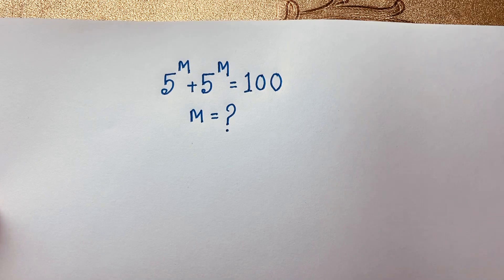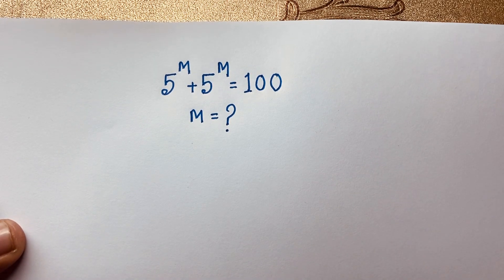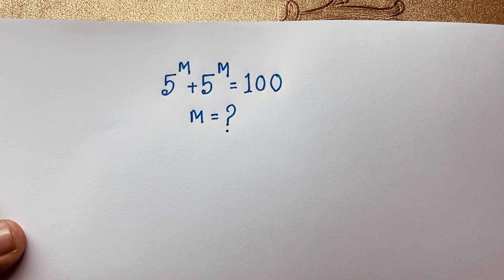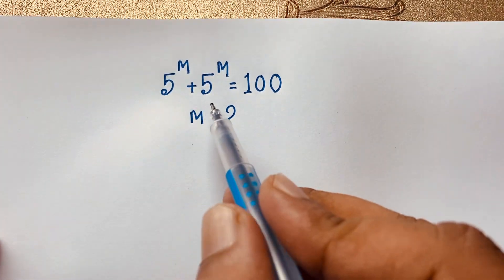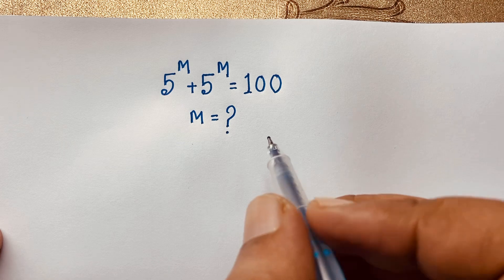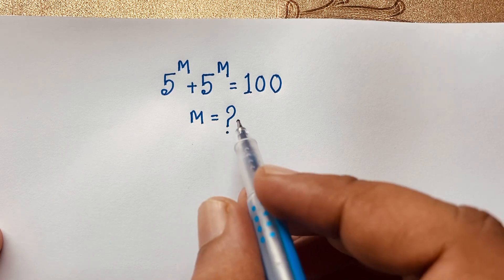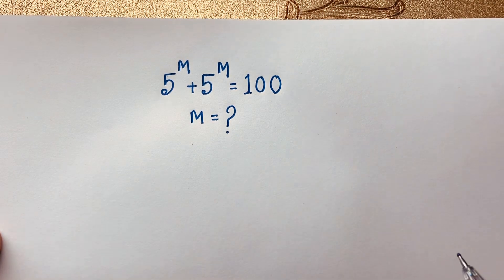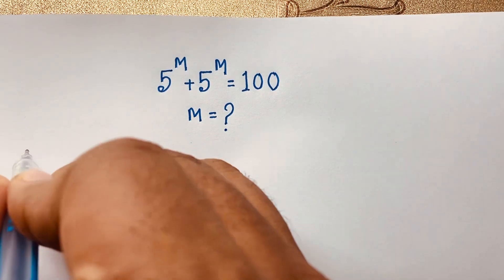Hello everyone, welcome to Russell's Classroom. Today we are solving a nice exponential math problem, which is 5 to the power of m plus 5 to the power of m is equal to 100. We are finding out what is the value of m in this exponential math problem.